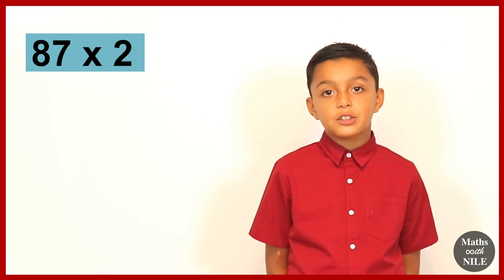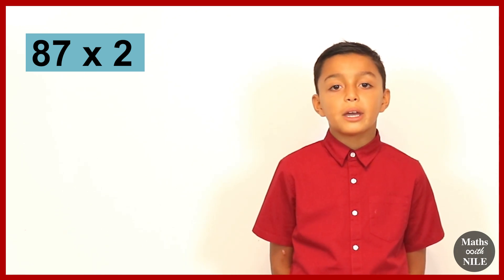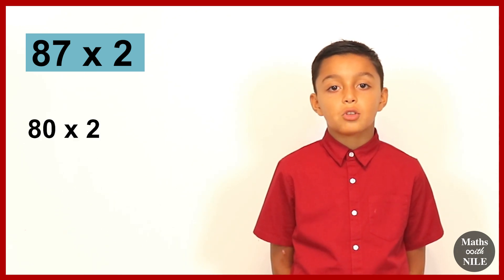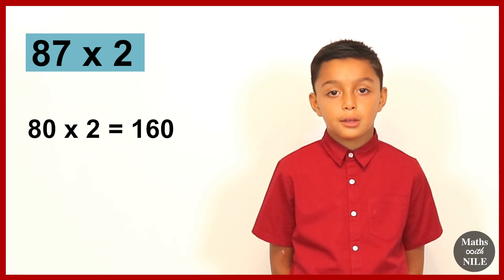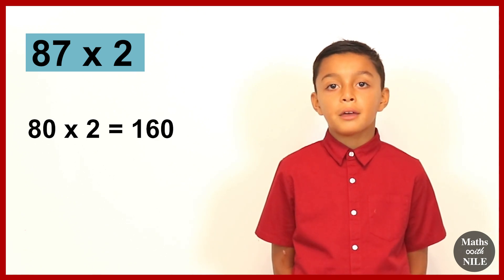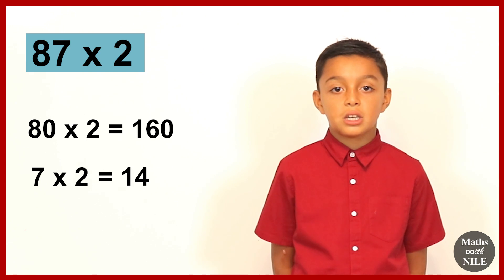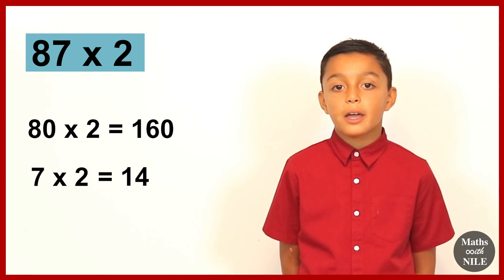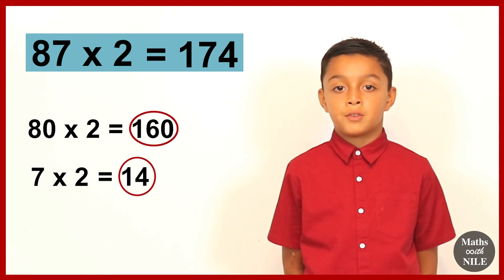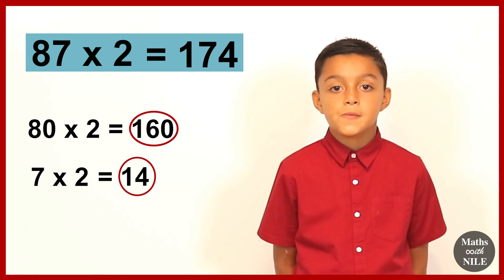Number 7. 87 times 2. So we'll do 80 times 2, which is 160, and then 7 times 2, which is 14. So if we add them together, it will be 174. Excellent, Niall.